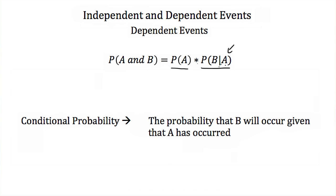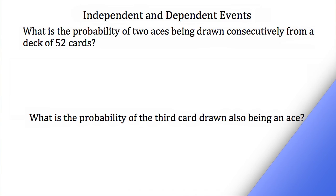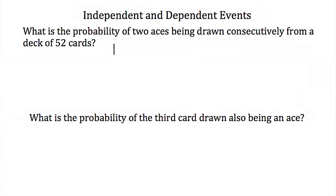Whenever you see this line between the two letters, this just means the probability of B given that A has already occurred. So let's try some examples. What is the probability of two aces being drawn consecutively from a deck of 52 cards? Since these are dependent events, the probability of A and B equals the probability of A, times the probability of B such that A has already occurred.